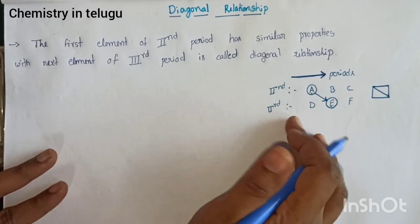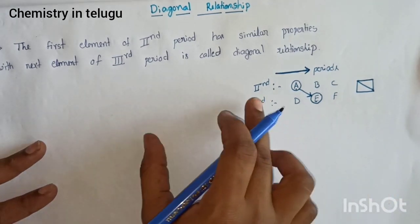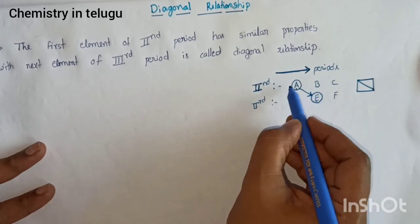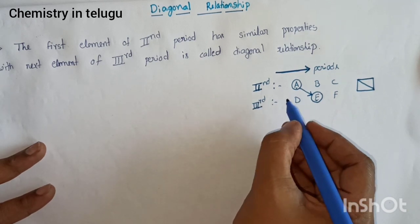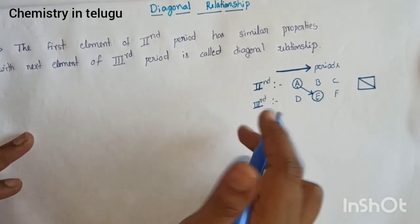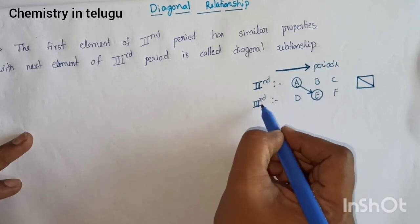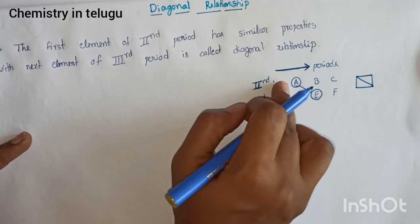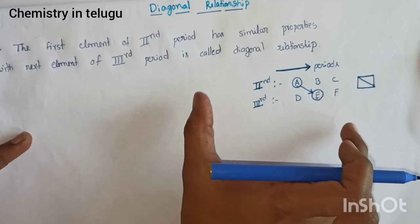In the periodic table, we have horizontal elements of the periods. Suppose we have a second period with elements A, B, C, and then we have a third period with elements D, E, F. In the second period, we have a first element, and in the third period, we have the next element. At the diagonal angle, we have similar properties. If we have similar properties, we have a Diagonal Relationship.